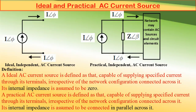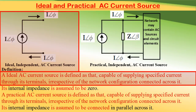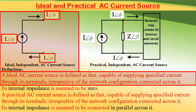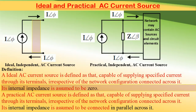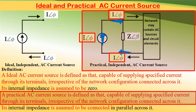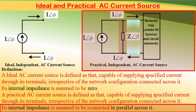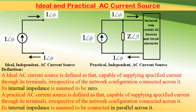Now let us define ideal and practical AC current sources. An ideal AC current source is one which is capable of delivering a specified AC current through its terminals irrespective of the network configuration connected across it, and its internal impedance is zero. Whereas the practical AC current source is again capable of delivering specified current through its terminals, and its internal impedance is shown connected in parallel with the current source as shown in the figure. These sources are called independent sources because the magnitude of voltage or current to be delivered is independent of any other parameter of the network.